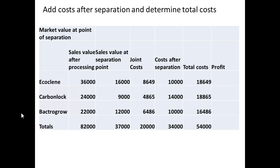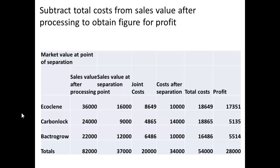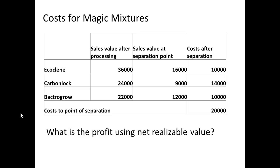I then add the costs after separation: adding 10,000 to Eco-Clean gives a total cost of 18,649. Doing the same for Carbon Log and VactoGrow and subtracting those total costs from the sales value after processing gives the profit: 17,351 for Eco-Clean, 5,135 for Carbon Log, and 551 for VactoGrow — a total of 28,000 pounds of profit.